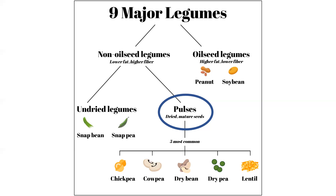There are several types of pulses, but the five most common by consumption and production are shown here: chickpea, cowpea — which most people think of as black-eyed peas, although technically there are other types of cowpeas — dry bean, dry pea, and lentil. Dry bean is where all the beans like pinto bean, black bean, and kidney bean fall in. So you can see that these are related, but legume, pulse, and bean are all a little bit different.